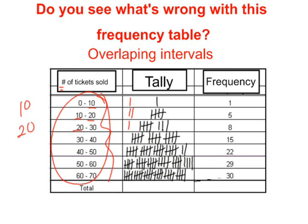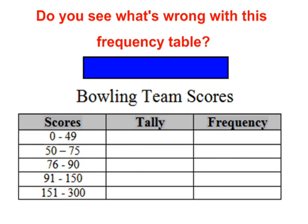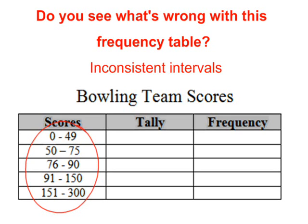Let's look at one more frequency table with a problem — this time it's also with the intervals. The problem is inconsistent intervals. The intervals go by 50s, then suddenly switch to 25, then to an interval of 14 or 15, then to 60, then to 150. Your intervals need to be consistent — you need to go by 10s, 20s, 2s, 100, or 1,000. You can't switch. That's pretty much all there is to creating frequency tables.